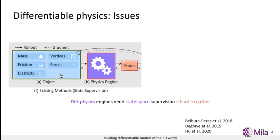However, such state space supervision is hard to gather because it requires precise 3D tracking, which is often impractical for systems especially like deformable solids and cloth.